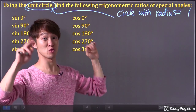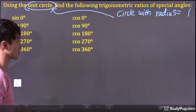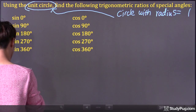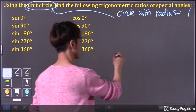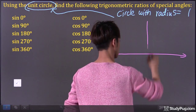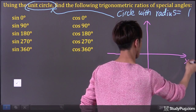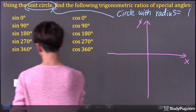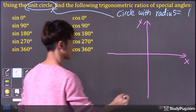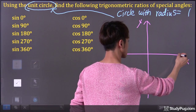And we give it a cool name: unit circle. So here it is. We have an X-axis and Y-axis. Let's draw a unit circle.